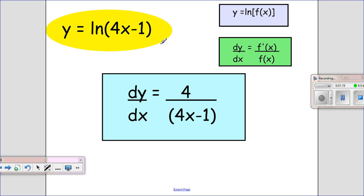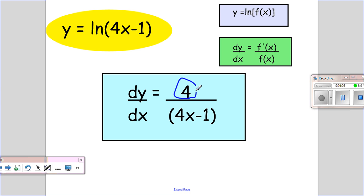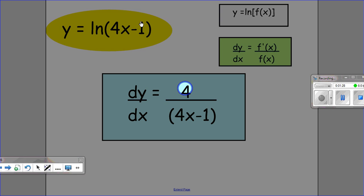So the next one's the same thing. I differentiate whatever my function is. My function's 4x minus 1. When I differentiate that, I'll just get straight 4, and then I divide by my function.